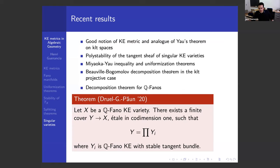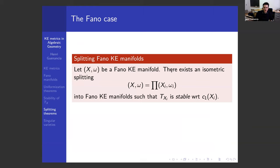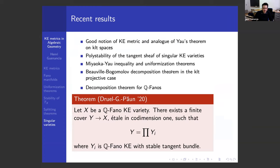Let me move on to another splitting theorem, this time not in the C1 = 0 case but in the positive C1 case: Q-Fano varieties. Q-Fano varieties are KLT projective varieties such that minus KX is a positive Q-Cartier line bundle. The theorem, which we proved with Stefan Kebekus and Mihai Păun, is as follows: starting from a Q-Fano variety, recall that we showed a Kähler-Einstein Fano manifold splits as a product of KE Fano manifolds with stable tangent bundle. We generalized this to the KLT case.